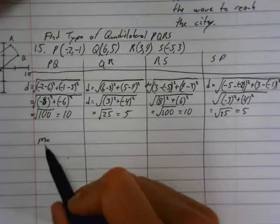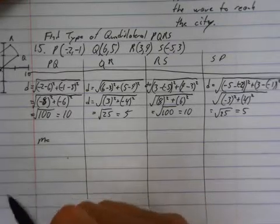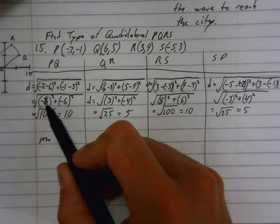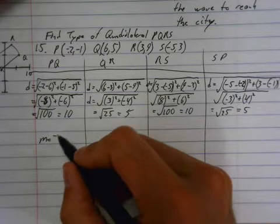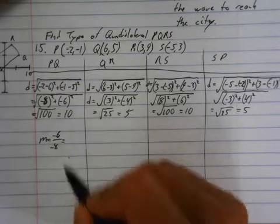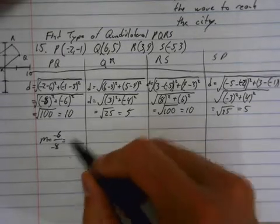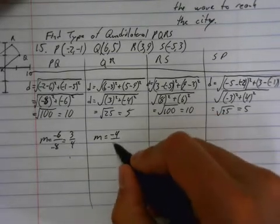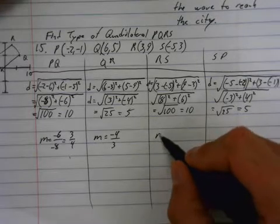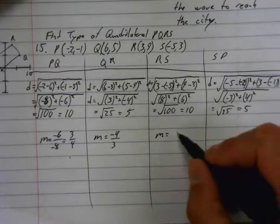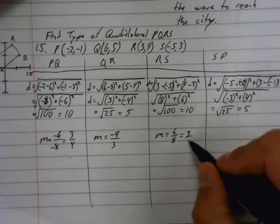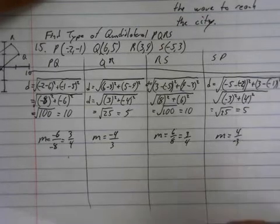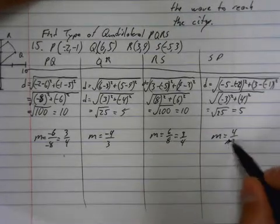Now remember, slope is y2 minus y1 over x2 minus x1, and I've already calculated that in my distance equation. This is my x2 minus x1, this is my y2 minus y1. So I just take that negative 6 and put it over the negative 8 and I've got my slope. Now I reduce my slopes though, so this goes to 3 over 4. Slope here is negative 4 over 3, that's my rise over run. Slope here is 6 over 8 which also reduces to 3 over 4. And slope here is 4 over negative 3, and I don't like negatives in the bottom so I'm just going to move it up to the top.